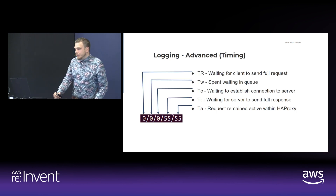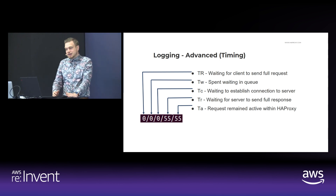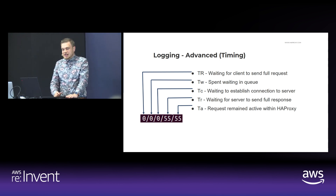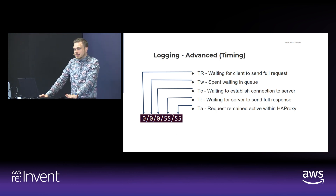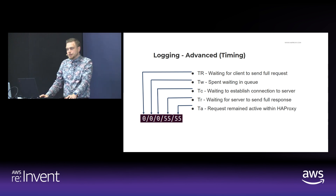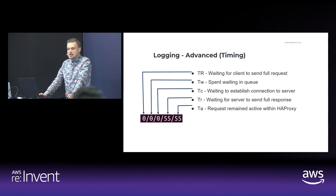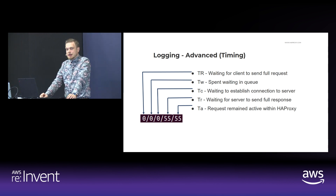Now that we have the basic log outputs covered, let's discuss some of the advanced logs. HAProxy default logs also contain various timing information, which allows us to track down where a slowness happened and pinpoint a possible issue. The default timing data includes how long HAProxy took waiting for the client to send the full request — the time elapsed between the first bytes received and the moment HAProxy received the empty line marking the end of the HTTP headers.